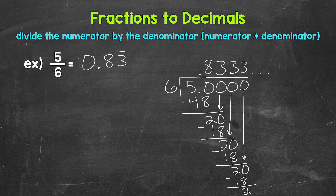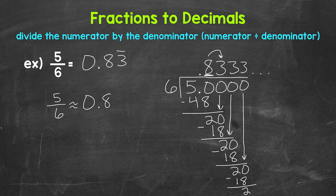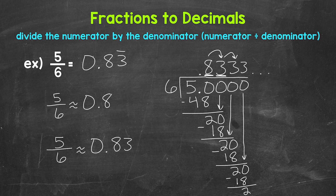Another option for writing repeating decimals is to round, and we can round to whatever place we would like. For this example, we'll round to the tenths place and hundredths. For tenths: five sixths is approximately 0.8, since we have an eight in the tenths with a three in the hundredths, so this rounds to eight tenths. For hundredths: we have a three in the hundredths with a three in the thousandths, so this rounds to 83 hundredths — five sixths is approximately 83 hundredths.